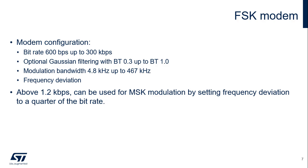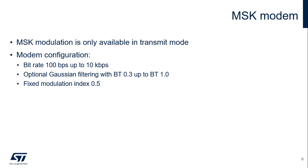The Frequency Shift Keying modem can be configured for bit rate, Gaussian filtering, modulation bandwidth, and frequency deviation. The Minimum Shift Keying modem is only available in transmit mode and can be configured for bit rate and Gaussian filtering.